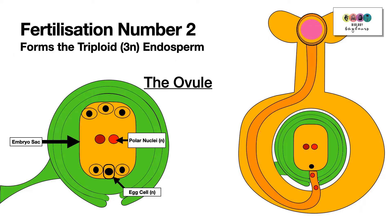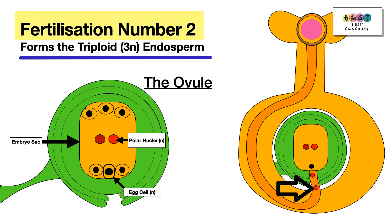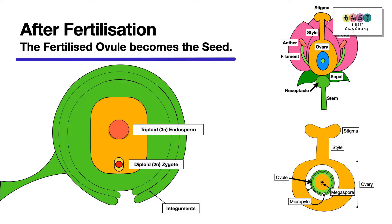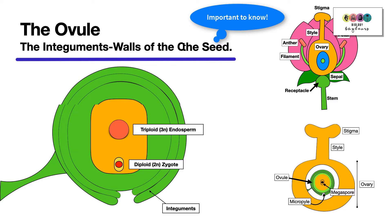In fertilization number two, the remaining male gamete — that sperm nucleus — fuses with the two polar nuclei to form a triploid endosperm. After double fertilization, the fertilized ovule becomes the seed. That's really important to know: the fertilized ovule becomes the seed.